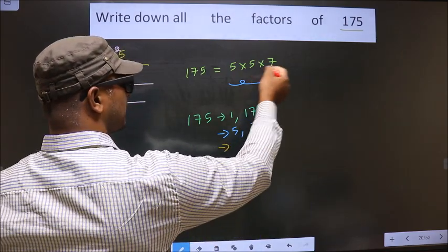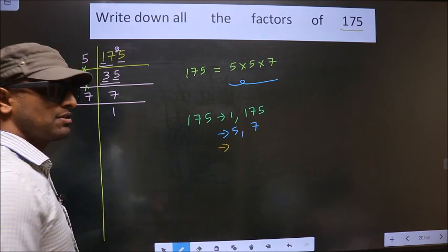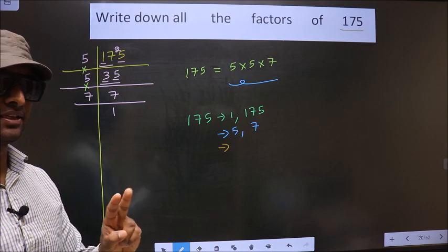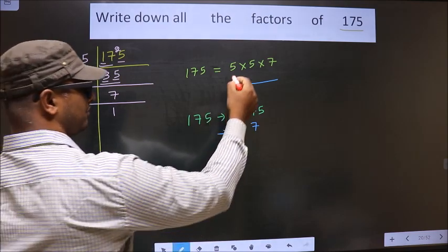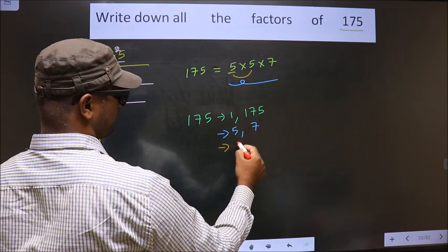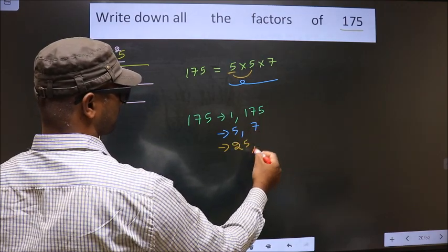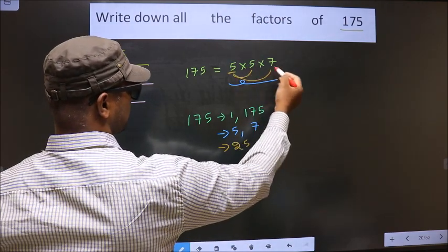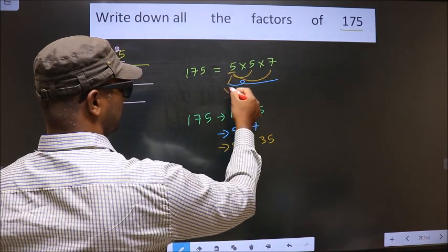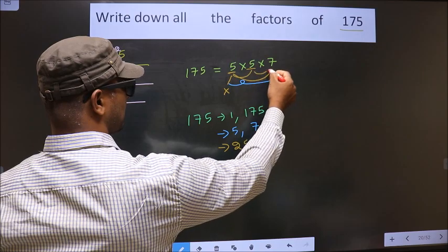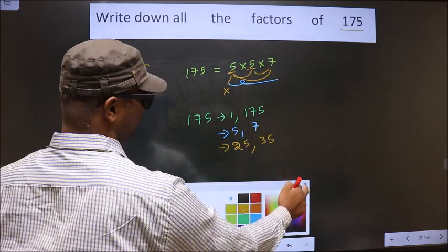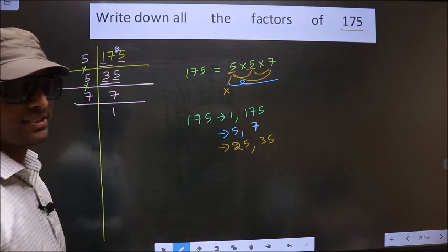Now from these numbers, you select a combination of 2 numbers. How do we do that? See, first I fix 5. I combine with the next number, that is 5. So 5 into 5 is 25. Now I combine with 7. 5 into 7 is 35. Now you leave this 5, fix this 5, combine with 7, you get 35 itself. So no more combinations possible.